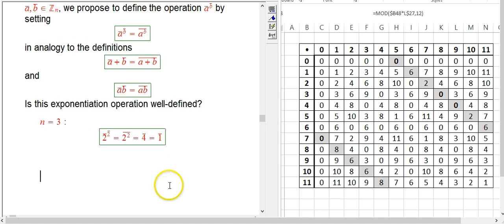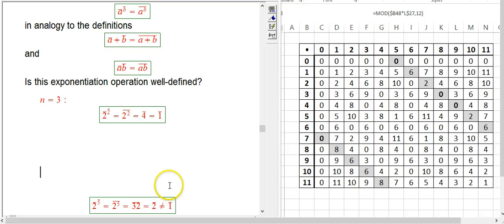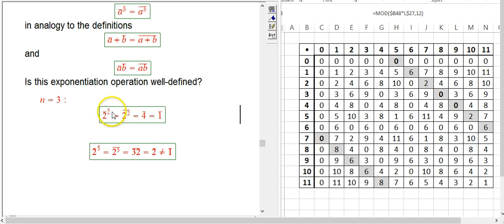Okay, so here's the problem, though. Somebody else comes along and says, okay, I want to write that exponent as 5 bar. That's the same exact element of z mod 3. It's just a different way to write it. But when we use the definition that we're trying to use for this new exponent operation, we actually use the 5 that's written on the page.